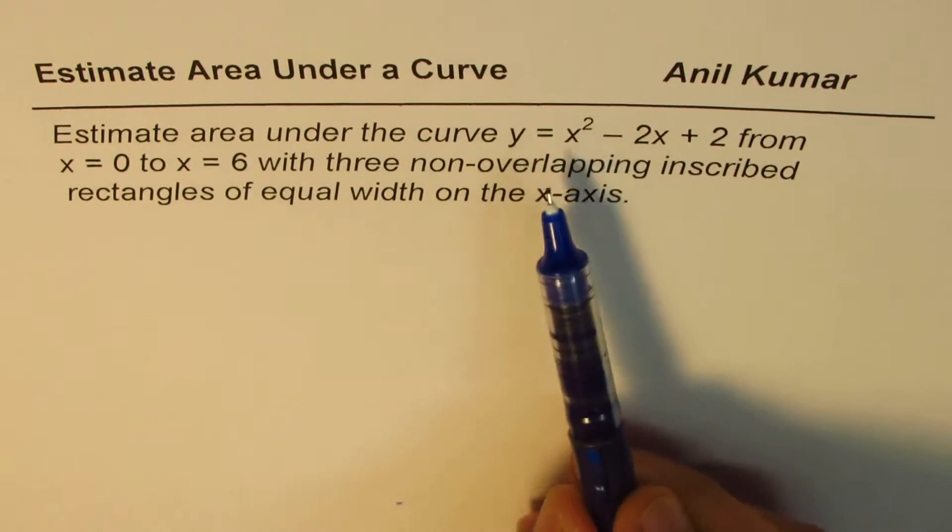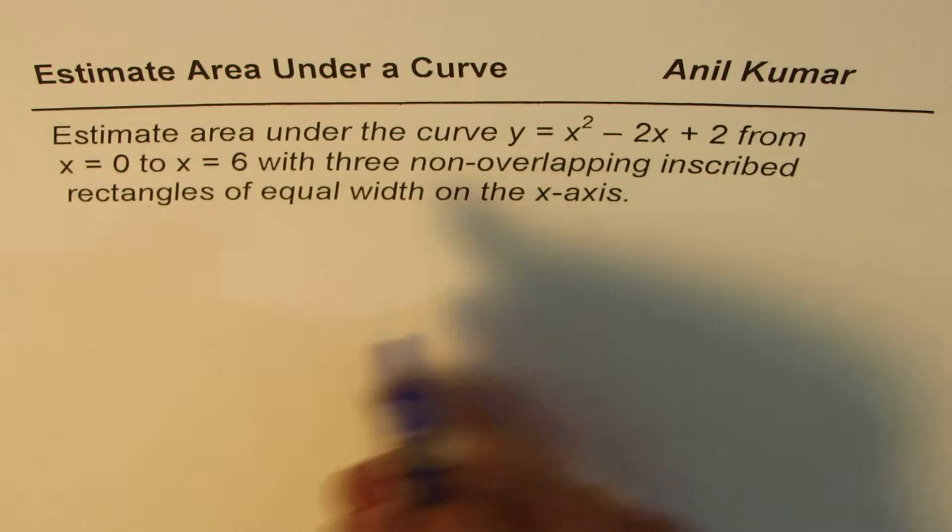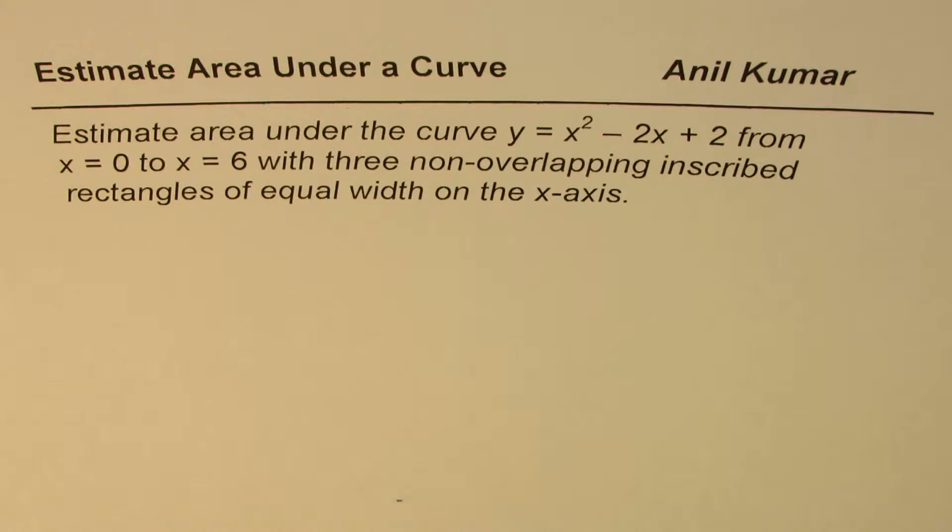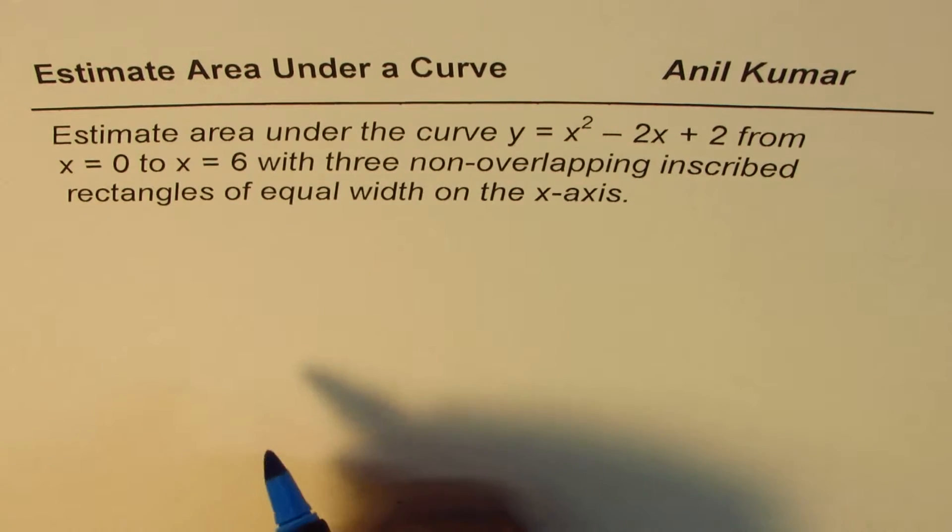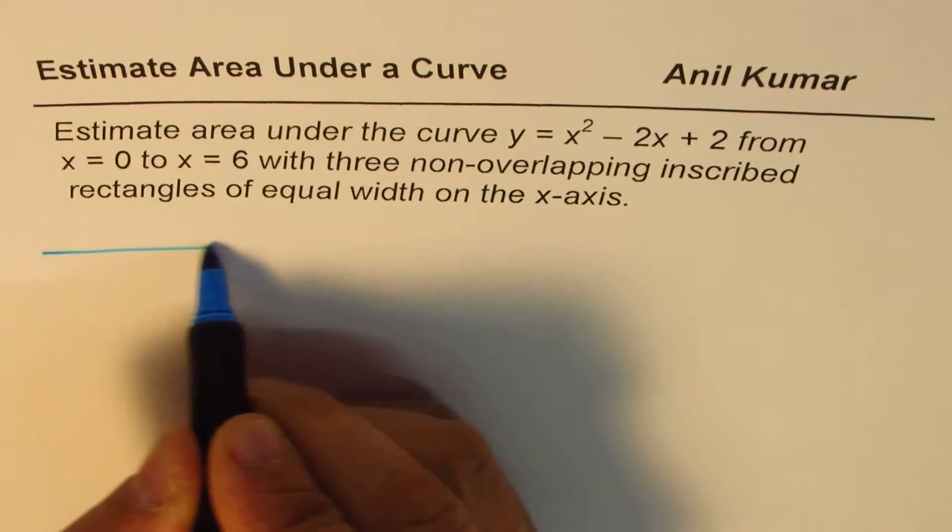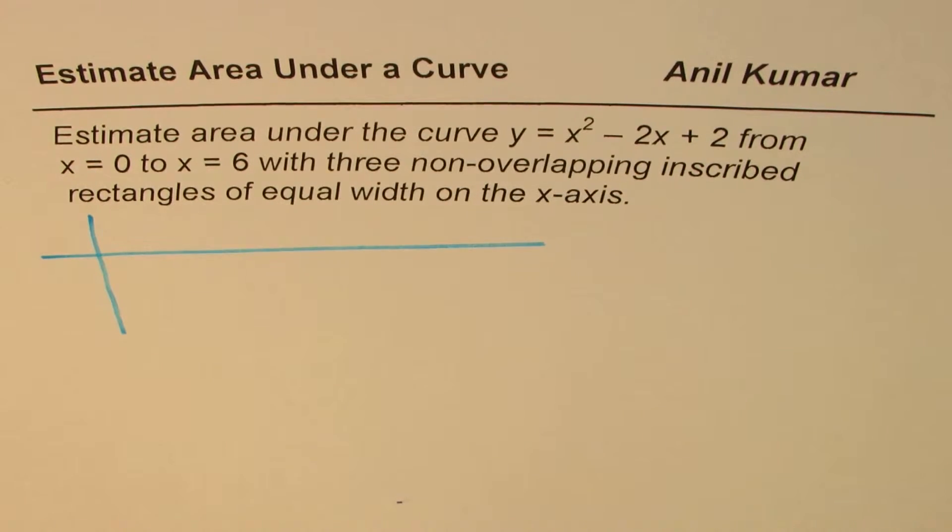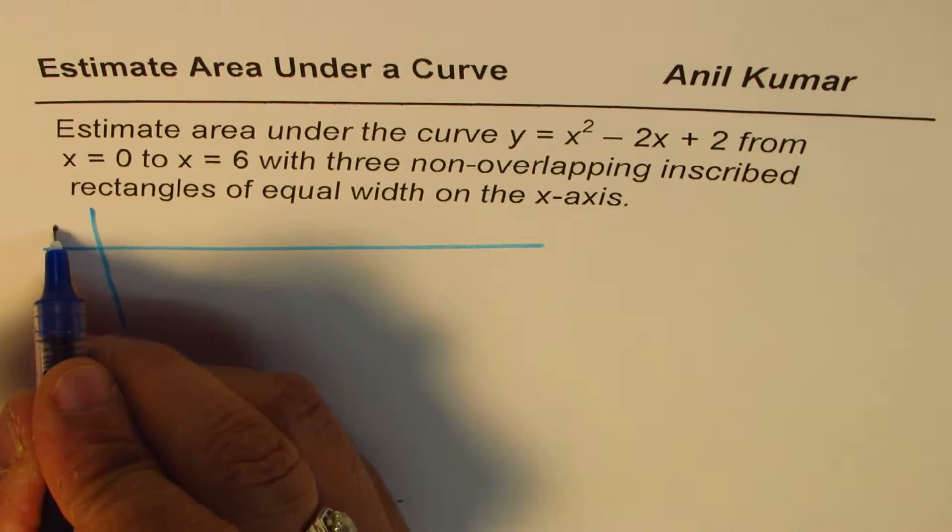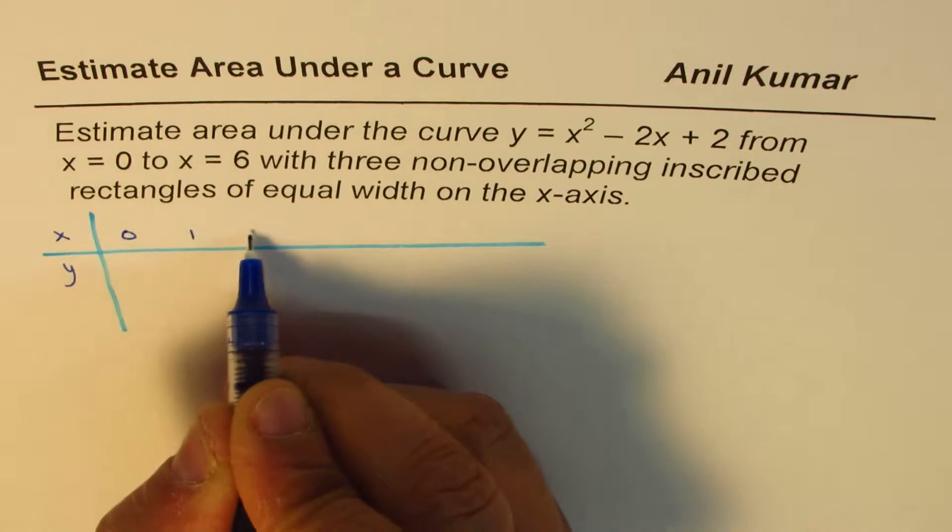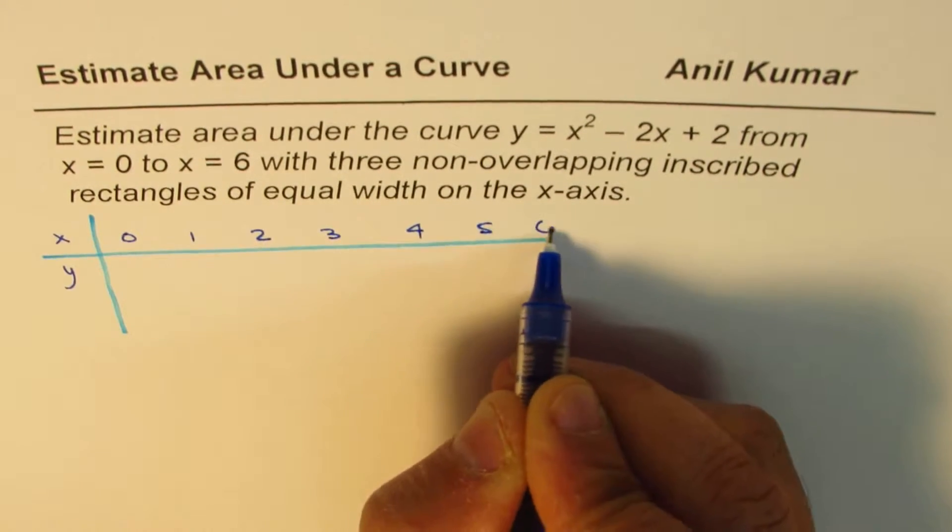We have a curve which is x squared minus 2x plus 2. Let us take some values to sketch this curve first. So I will make a table of values and will quickly calculate some values using the calculator. We can take x values as 0, 1, 2, 3, 4, 5, and 6.